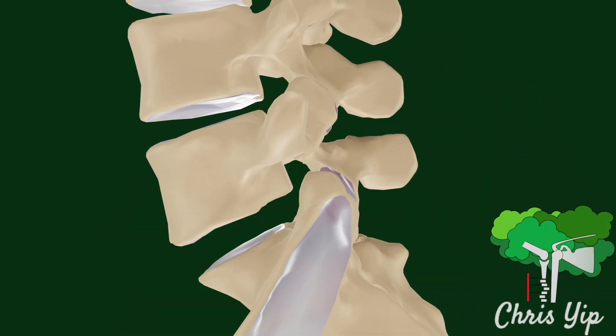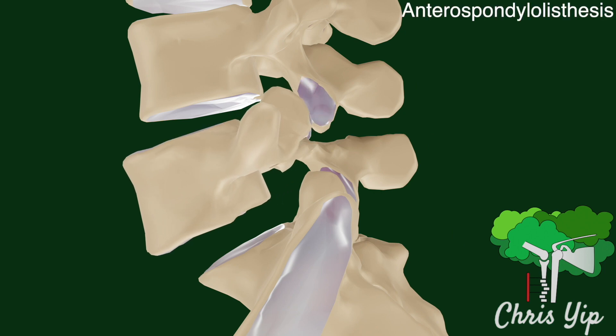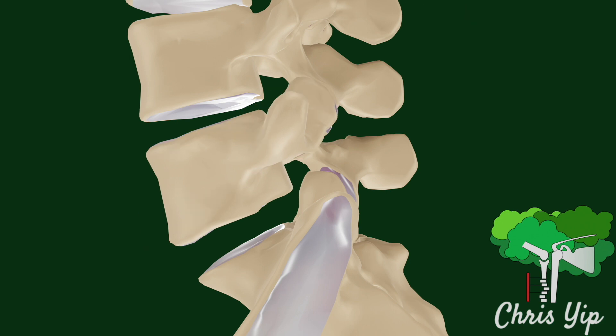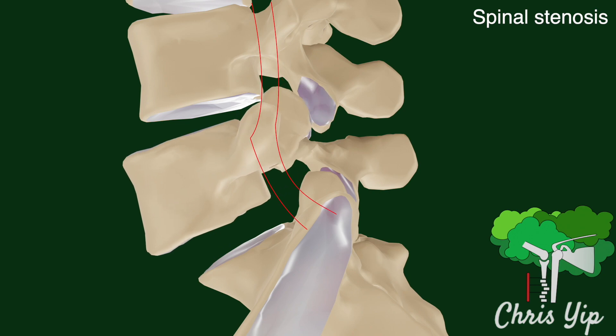An important complication of this breakage, especially if bilateral, is the anterior translation of the cranial vertebra, known as anterolisthesis. This can result in the narrowing of the spinal canal, known as spinal stenosis.